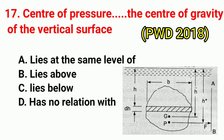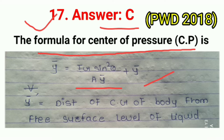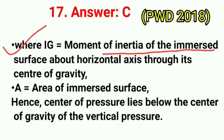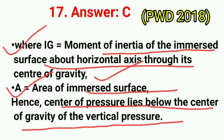Question No. 17. Centre of pressure lies __ the centre of gravity of the vertical surface. This question was asked in PWD 2018. Correct answer is option C: below. The formula for centre of pressure is Y̅ = (IG sin²θ) / (AY̅) + Y̅, where Y̅ is the distance of CG of body from free surface, IG is moment of inertia about horizontal axis through CG, and A is the area of immersed surface. Hence, centre of pressure lies below the centre of gravity.